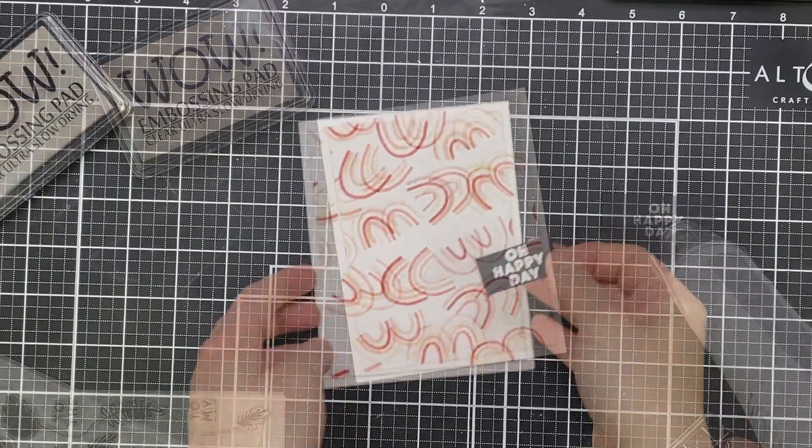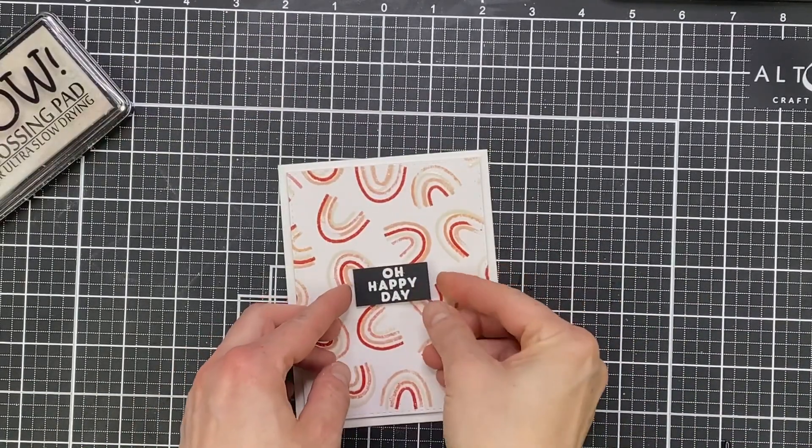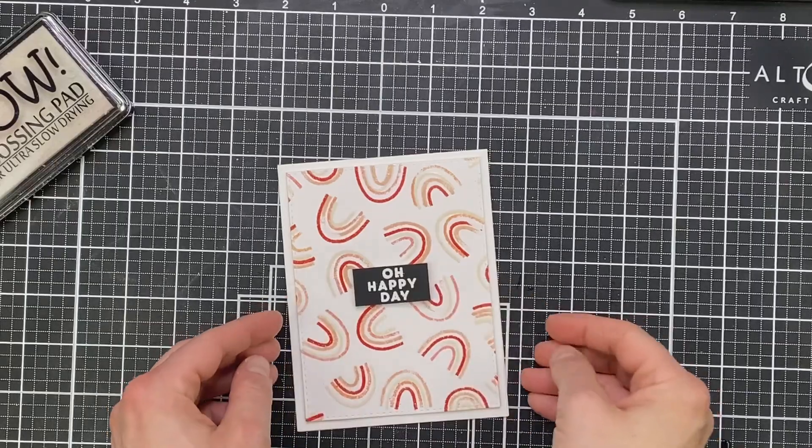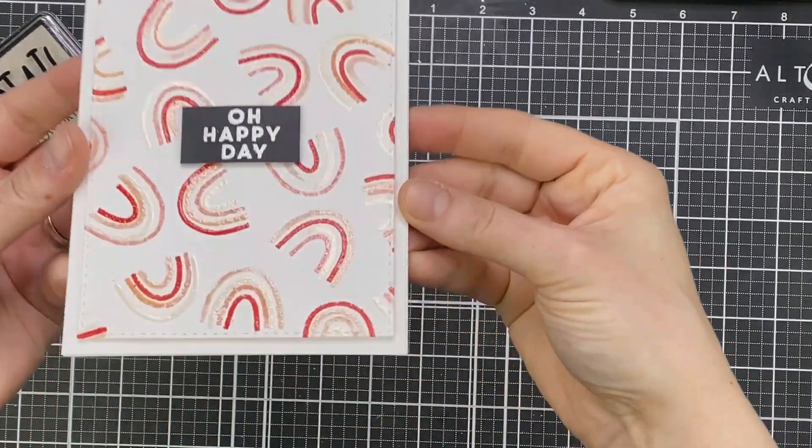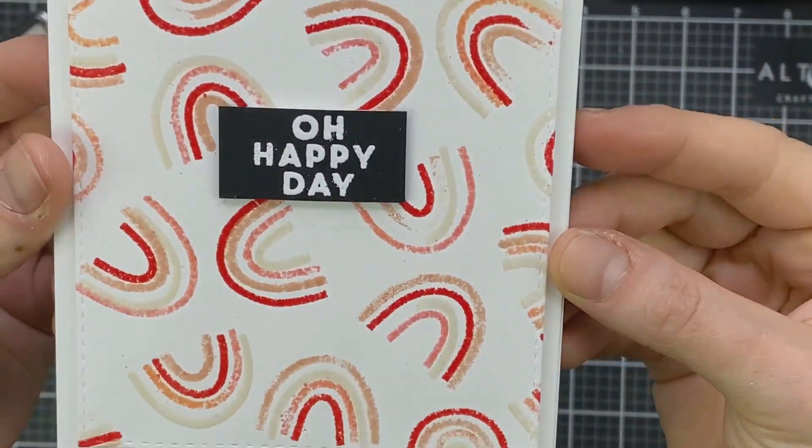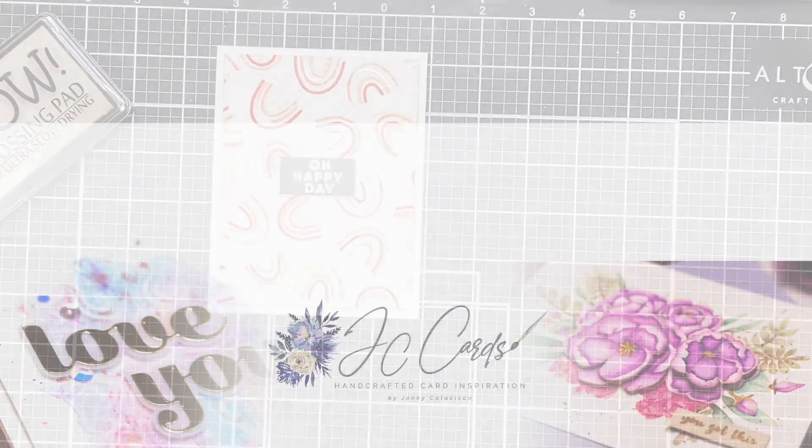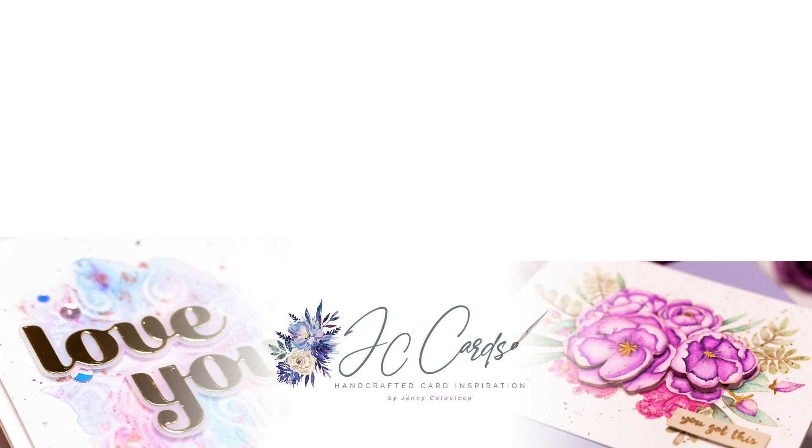And I left it at that. Kept it clean and simple. This approach, this technique, works with any of the turnabout stamps with Concord & 9th, and you can do this with any colors of embossing powder, so lots of possibilities. And that finishes it from me today. I hope I gave you some tips and tricks for using your turnabout stamps with heat embossing.